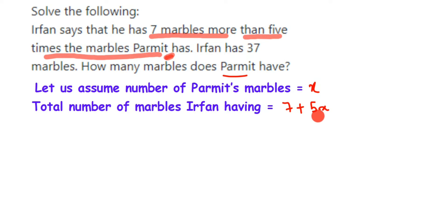So 5x will come. But we have also given that Irfan is having 37 marbles. So we are getting an equation. We have given the relationship between Irfan and Parmit's marbles, that is 7 plus 5x. And in the question itself we have given that Irfan is having 37 marbles total. So here I am going to equate it. Total number of marbles Irfan has is 7 plus 5x, but we also know that he is having 37 marbles. So 37 is equal to 7 plus 5x.